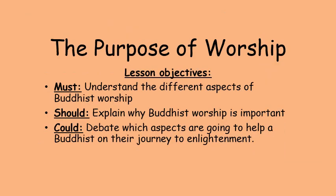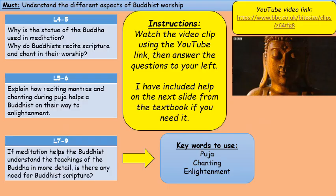In today's lesson you're going to be looking at the purpose of worship — why the things you started looking at last lesson are really important. The objectives are to understand the different aspects of Buddhist worship, why it's important, and then to debate which part you think is most crucial in getting Buddhists towards their goal of enlightenment. Enlightenment is the state of mind when you realise the truth about the world, you are at complete peace, and you are not attached to anything. This is what Buddhists are aiming for.